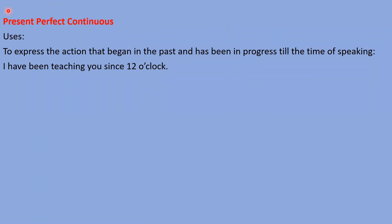Dear students, you will find that this tense is a combination of two tenses — perfect and continuous. Perfect means completed; continuous means going on. So if I say 'I have been teaching you since 12 o'clock,' imagine the current time is 4 o'clock. That means I have taught you for 4 hours — that part is completed, that's why we say perfect tense. But still the action is going on, still in process — that's why we need continuous tense. In present perfect continuous tense, it's a combination: something has been completed and still something is going on.